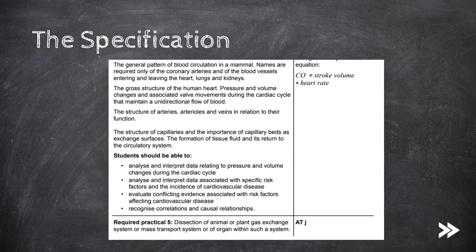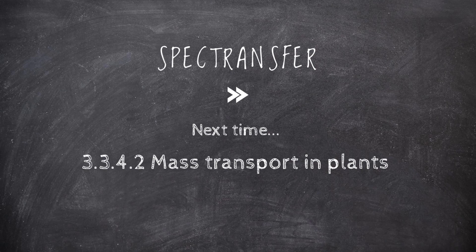So we've covered the pattern of blood circulation in a mammal, the gross structure of the human heart, and the pressure and volume changes as well as valve movements during the cardiac cycle. We've also covered the structure of arteries, arterioles and veins in relation to their function, the structure of capillaries and the importance of capillary beds as exchange surfaces, and how tissue fluid is formed and returns to the circulatory system. Next time we'll be looking at mass transport in plants.